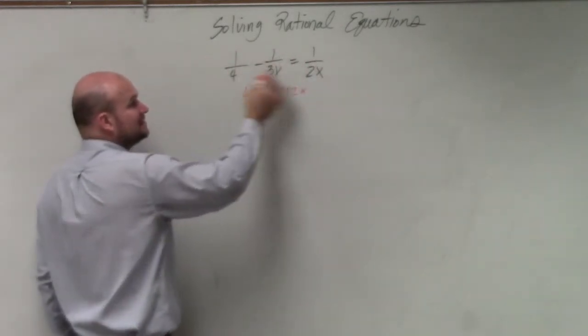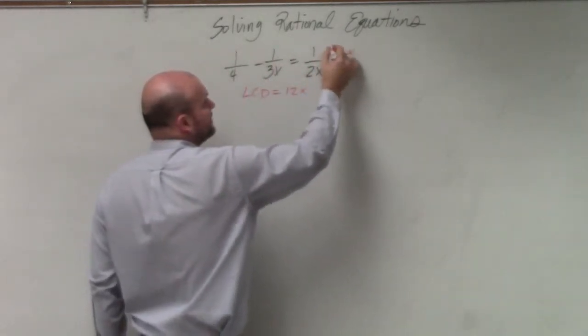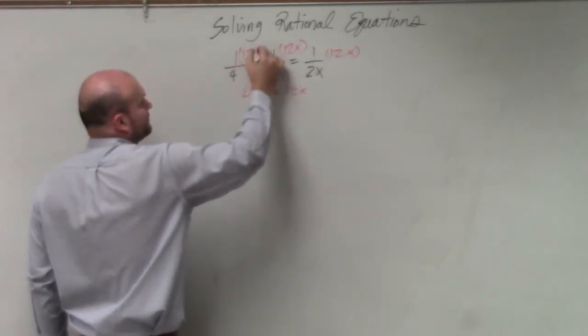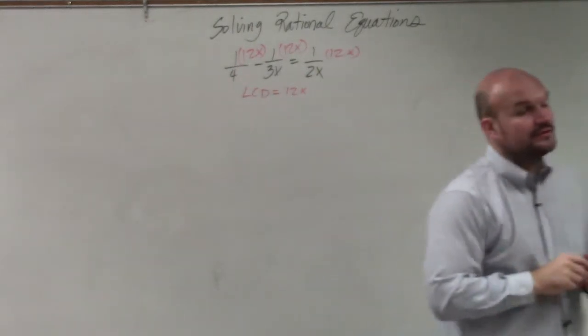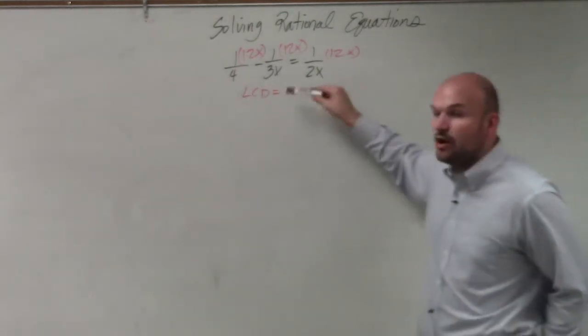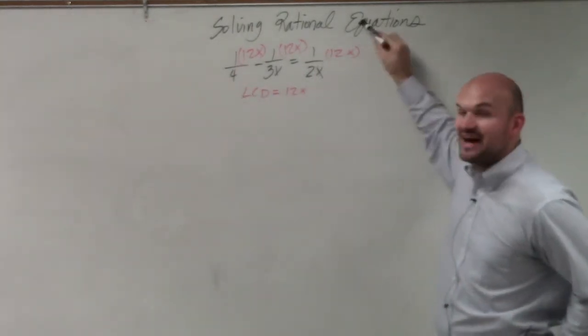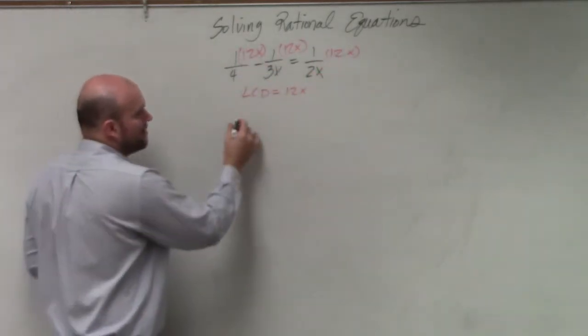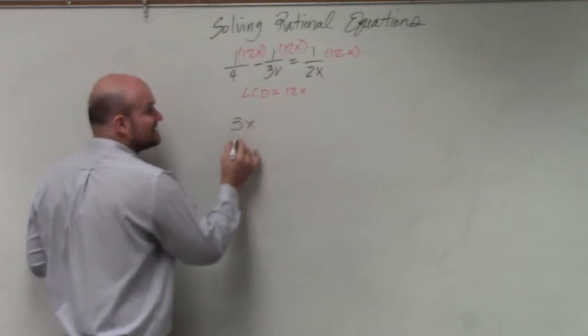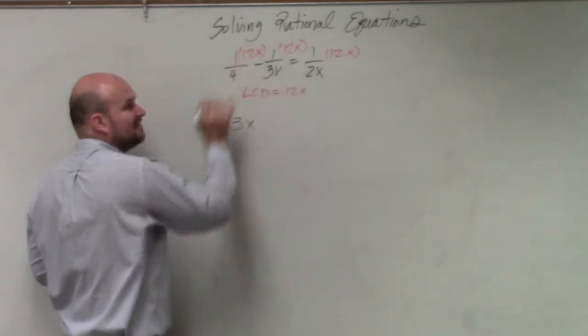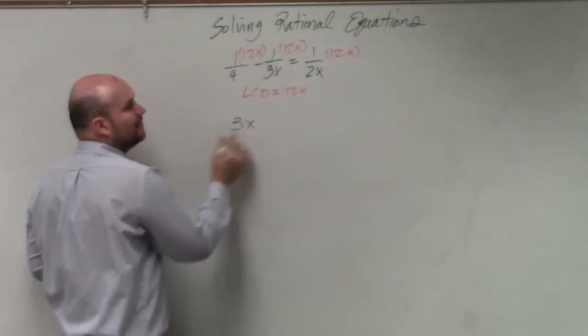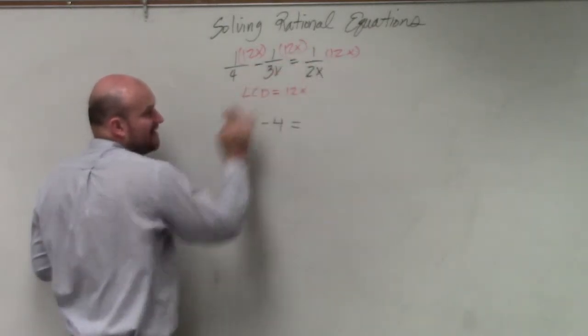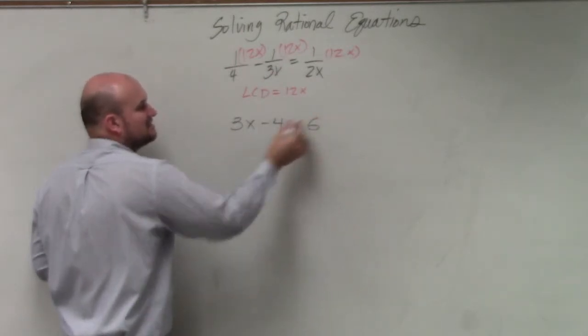Now I need to multiply every single term by my LCD. The reason why that's so helpful is because now all of my denominators divide into that LCD. So 4 divides into 12x how many times? 3x times. 3x divides into 12x 4 times, and that's minus, so it's minus 4, equals 2x divides into 12x 6 times.